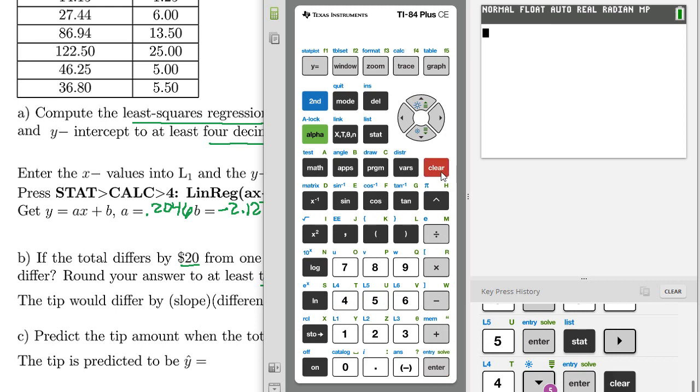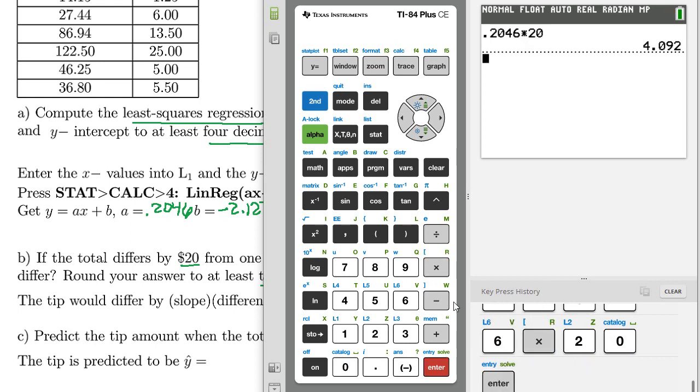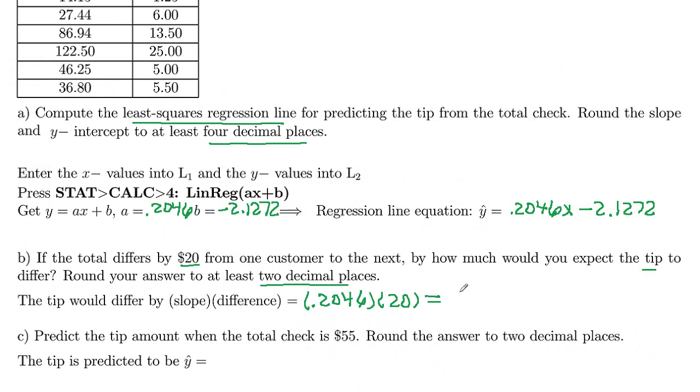And round to two decimal places. So if we go ahead and clear this out, 0.2046 times 20 gives us 4.09 to two decimal places. So $4.09 should be the difference in the tip amount.